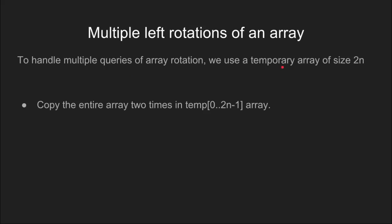There are several approaches like simple juggling algorithm, block swap algorithm, and reverse algorithm to handle single rotation. But an efficient method to handle multiple queries of an array rotation is to use a temporary array of size 2n.